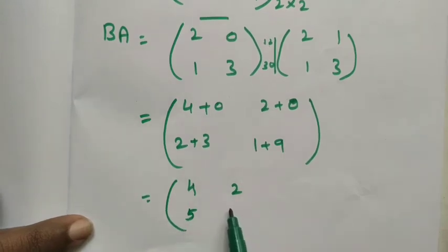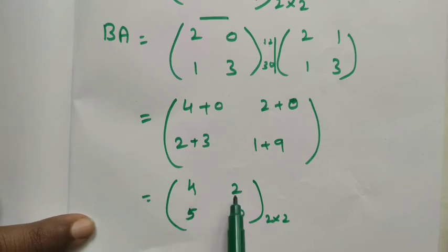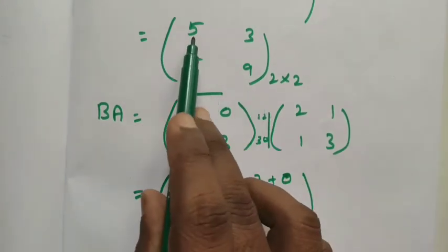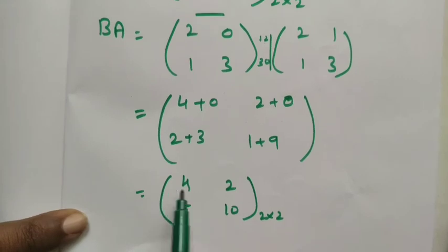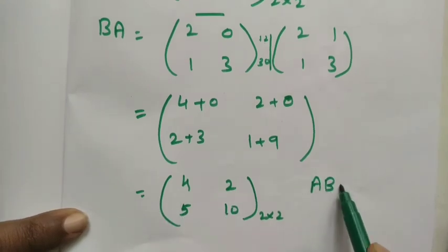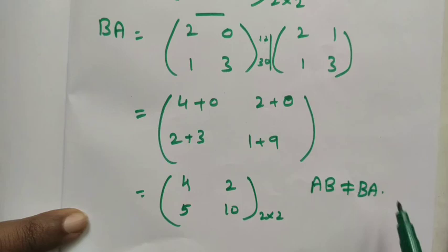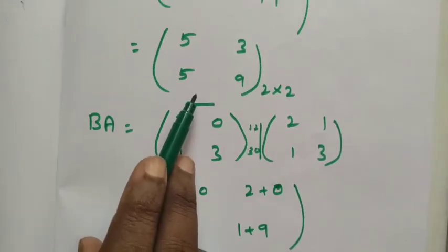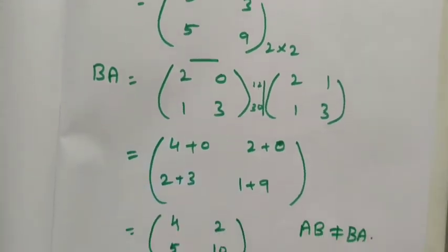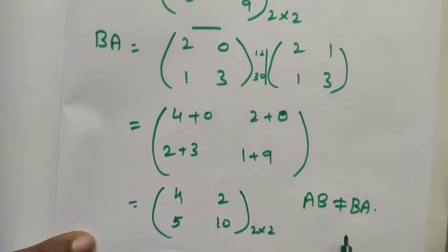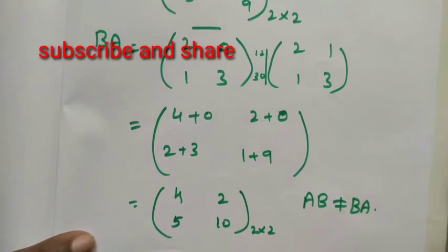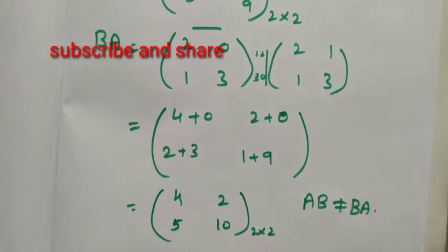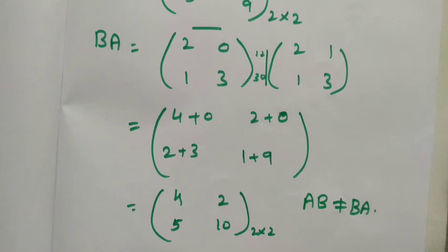Comparing the two results: AB = [5, 3; 5, 9] and BA = [4, 2; 5, 10]. Since AB is not equal to BA, matrix multiplication is not commutative in this case. Therefore AB ≠ BA. Thank you students.